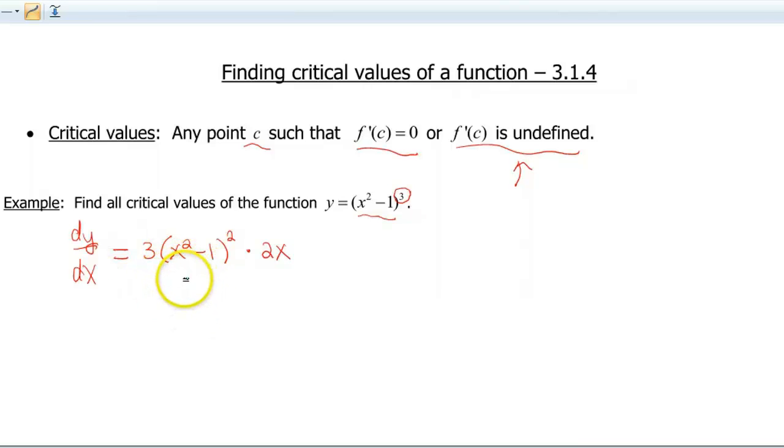If you remember kind of how algebra works, there are a few different ways we can attack this. I look at this and I see basically three different pieces. I see the piece of 3, but that can never be 0, so we can ignore that. I also see this piece of (x² - 1). We happen to be squaring it, but that's not really gonna change anything. And then I also see this piece of 2x.